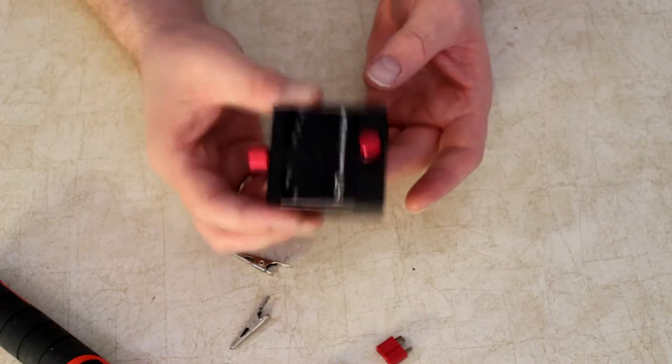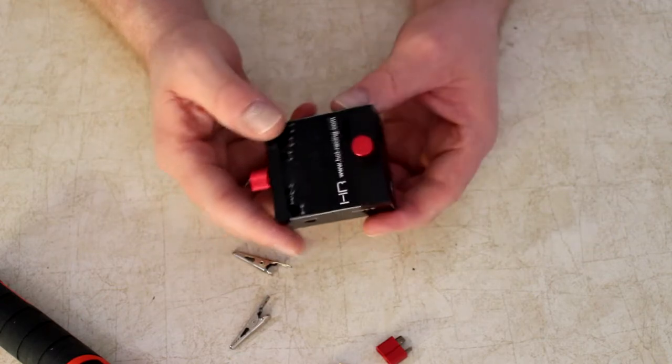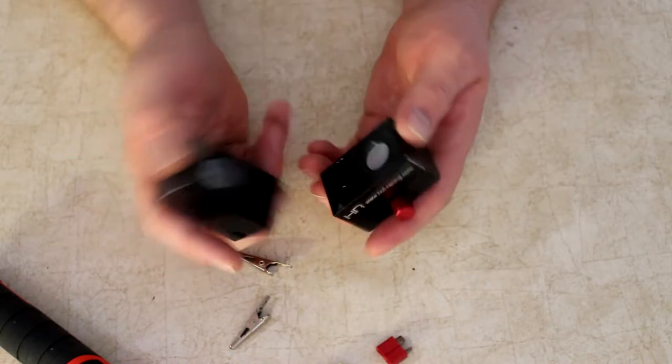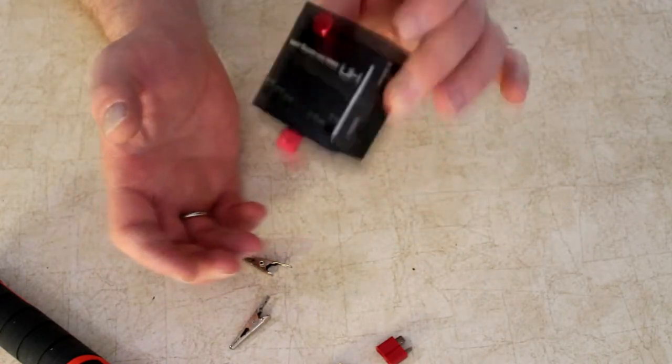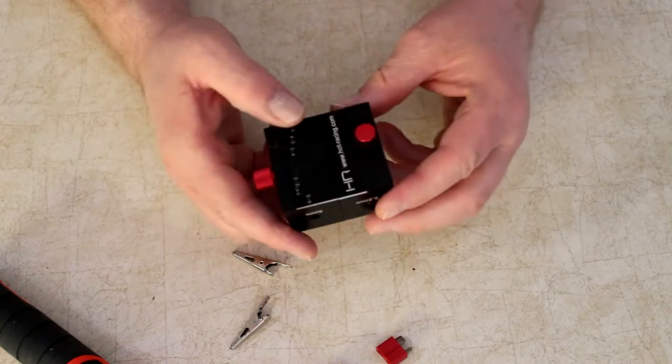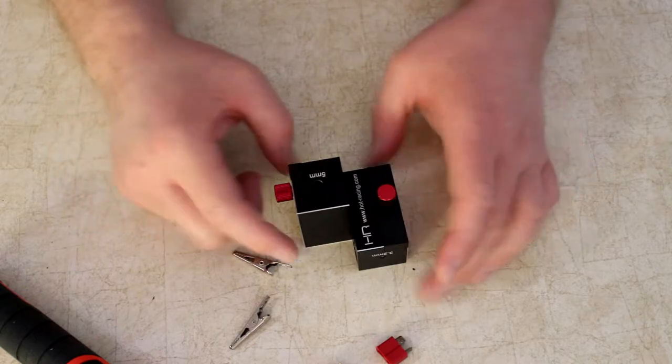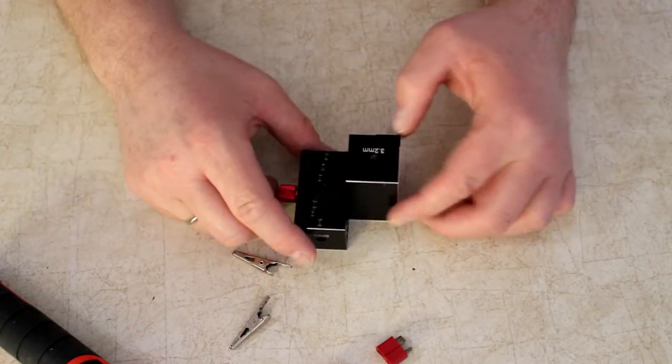And the other fun fact about this guy here, you can separate them. There is a strong magnet on this side here that holds. And when you're soldering your bullets on the side, you can just physically flip it. It will hold itself.